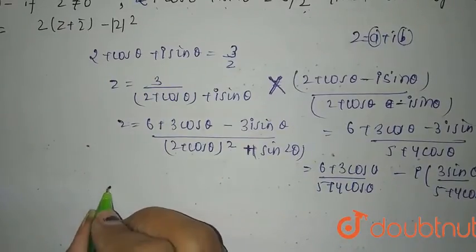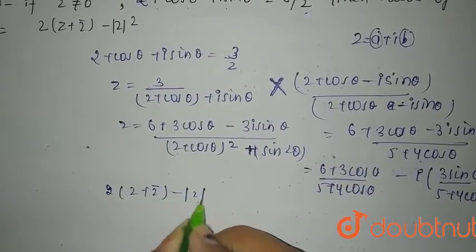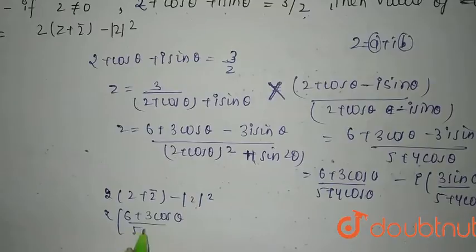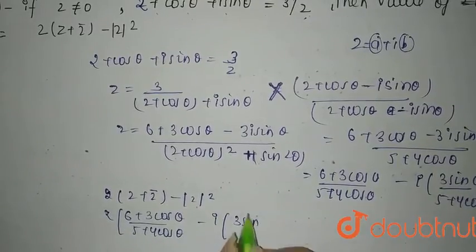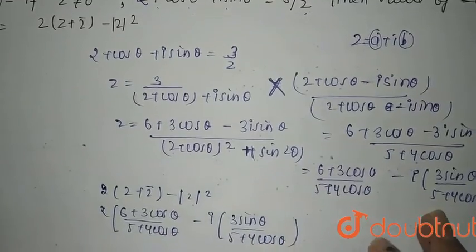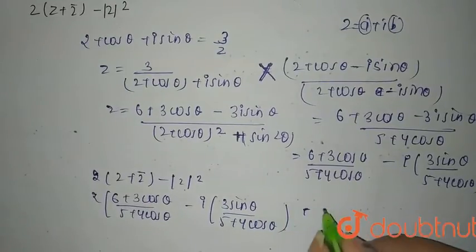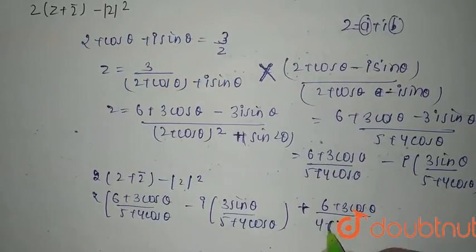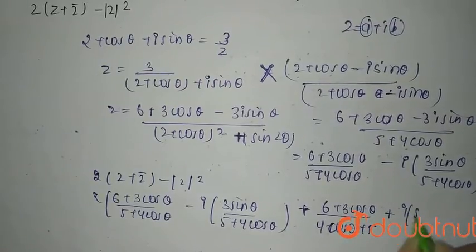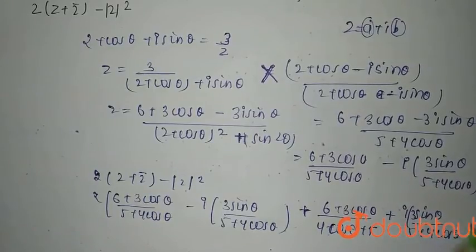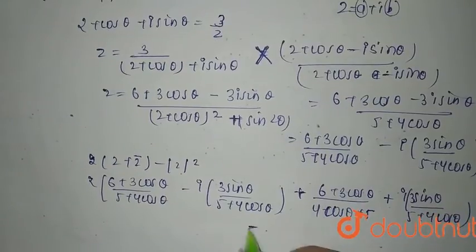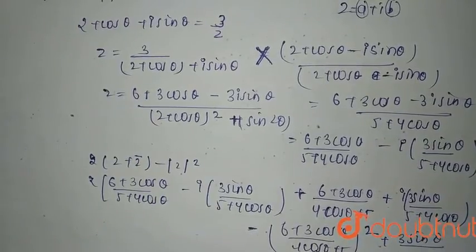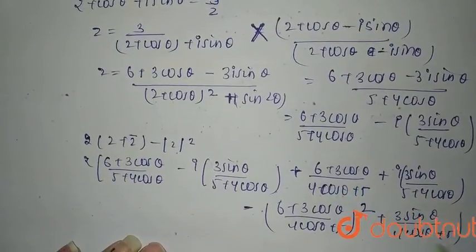Now you have z into (z + z bar − mod z squared). Opening this, z is (6 + 3cosθ)/(5 + 4cosθ) − i·3sinθ/(5 + 4cosθ), and z conjugate is (6 + 3cosθ)/(5 + 4cosθ) + i·3sinθ/(5 + 4cosθ). And mod z squared is (6 + 3cosθ)² divided by (4cosθ + 5)² plus (3sinθ)² divided by (4cosθ + 5)².